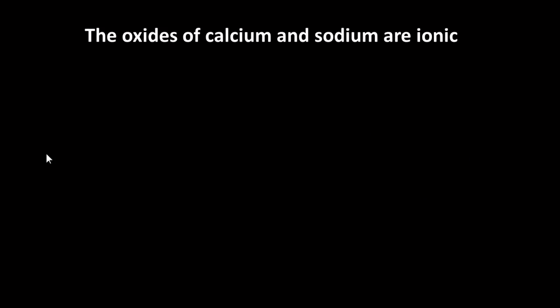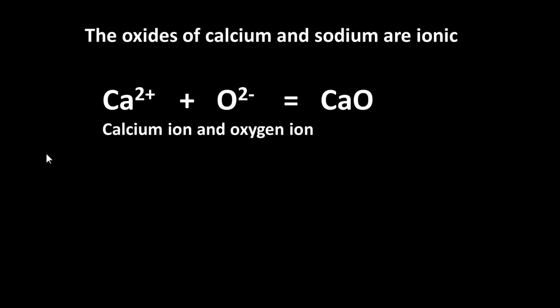And the oxides of calcium and sodium are examples of ionic compounds. So in calcium oxide, calcium has lost two electrons, so it's left with two positive charges. And oxygen has gained two electrons, so it's left with two negative charges.